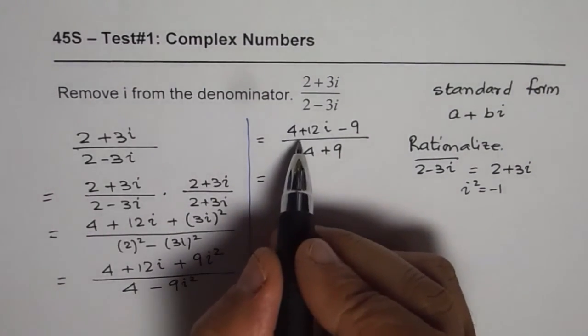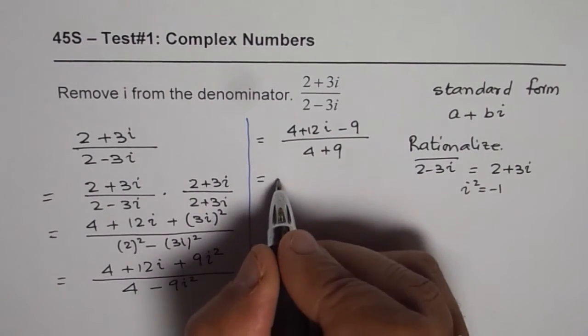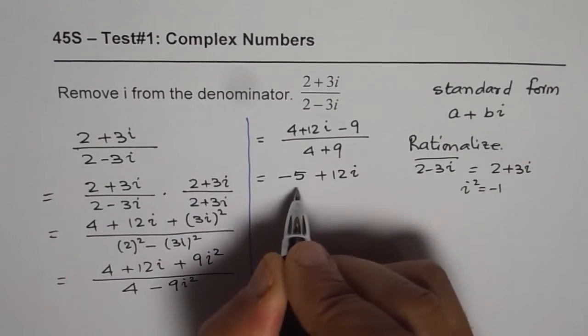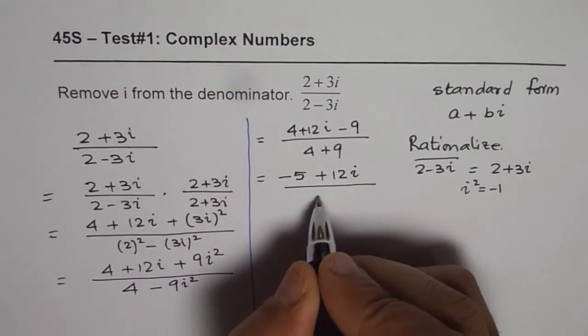Combine the like terms. In this case, it is 4 minus 9, which is minus 5, plus 12i, divided by 4 plus 9 is 13.